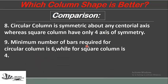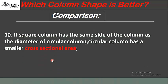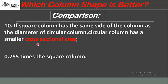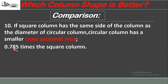The minimum number of bars required for a circular column is six, while for a square column it is four. If the side of a square column equals the diameter of a circular column, the circular column has a smaller cross-sectional area and occupies less space — specifically 0.785 times that of the square column.